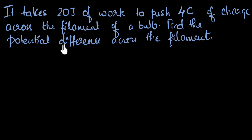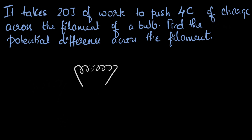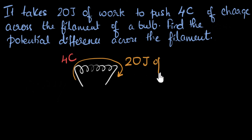Find the potential difference across the filament. In this question, we are asked to find what the potential difference is. Here is the filament of a bulb. We know that to push four coulombs of charge across the filament, it takes 20 joules of work.